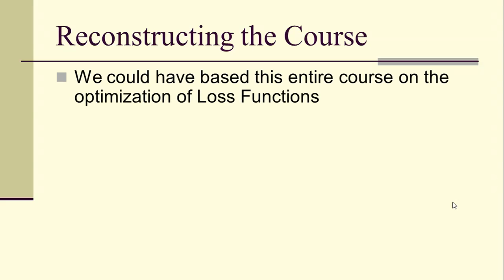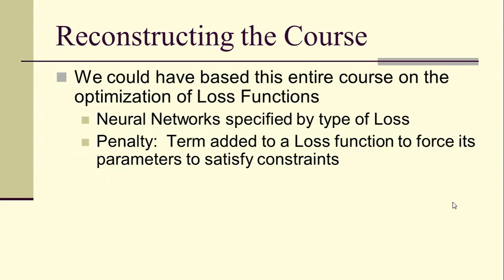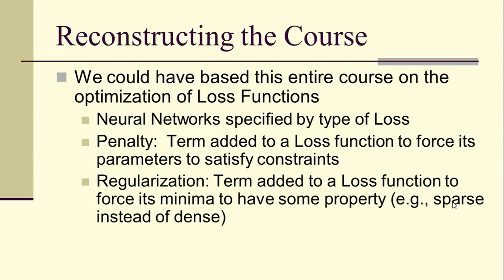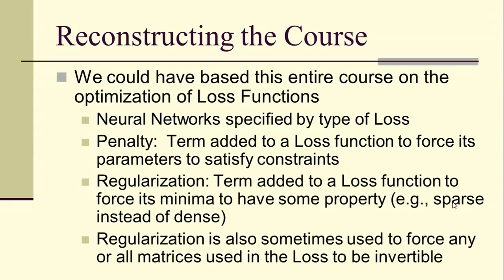We could have actually done this entire course based on the optimization of loss functions. Neural networks are specified by a type of loss. We could have introduced this concept of a penalty, which is a term added to a loss function to force its parameters to satisfy certain constraints. Regularization: those are terms added to a loss function to force its minimum to have some property. For instance, if we want sparse matrices to be the results when working with sparse data, then that's usually what's called an L1 regularization.